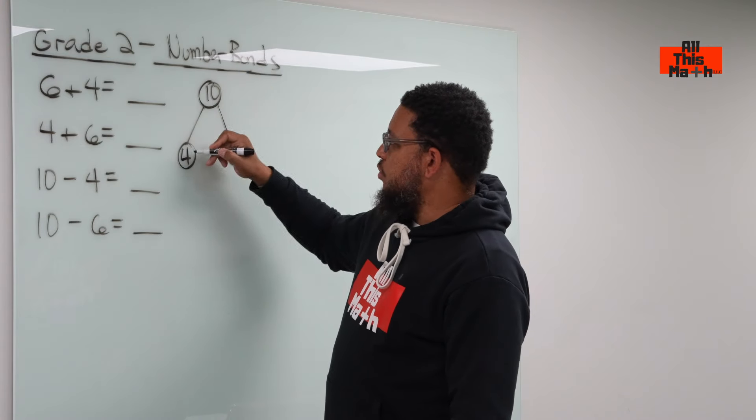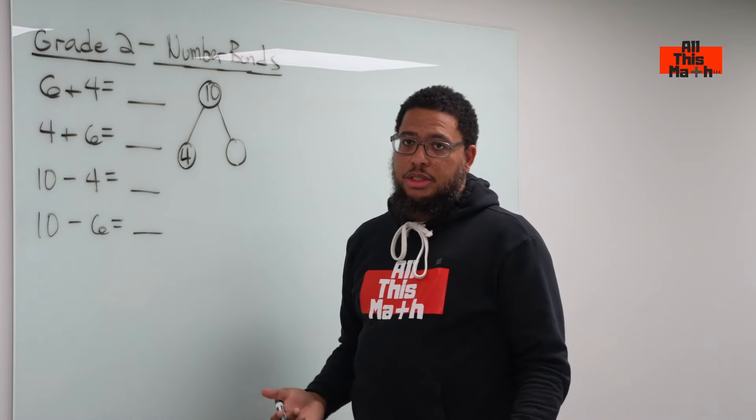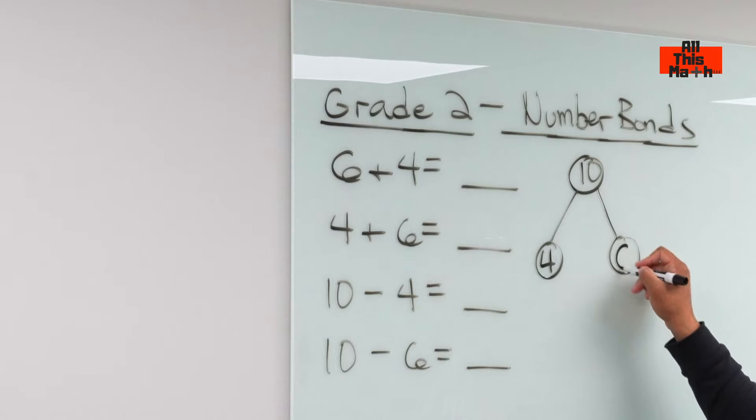So if you do ten minus four, if you have ten and you take away four, what does that leave you with? You can count backwards from ten by four using your fingers if you need to and you end up at six. So ten minus four is also six.